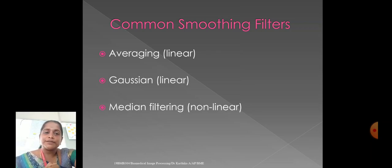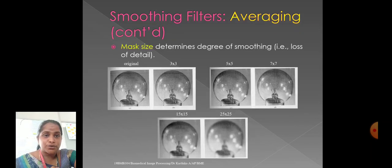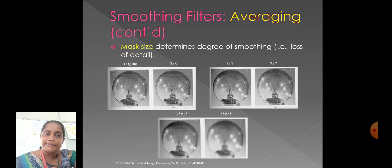And also, we have some common smoothing filters. Averaging, which is also called as a linear filter, Gaussian filter, linear filter, and also, we have a median filtering, non-linear filter. And while coming into smoothing filters, averaging, it plays a vital role. And also, we have averaging filter examples. Here, the mask size determines degree of smoothing, loss of detail.